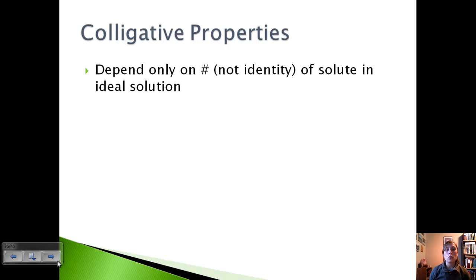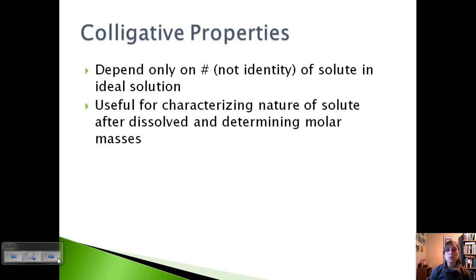Colligative properties depend only on the number, not the identity of solute particles in the ideal solution. We don't care what it is, we only want to count the number of particles. This is useful for characterizing the nature of the solute after it's dissolved and also for determining molar masses. Because if we can count the number of particles, we can determine molar mass.